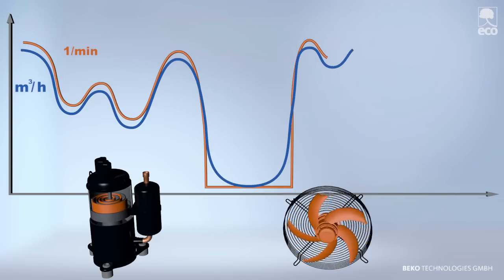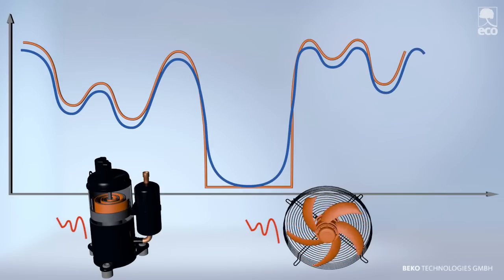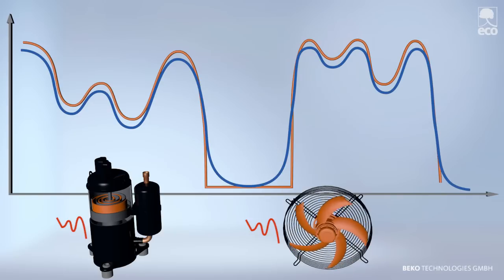Larger dryers adapt both the speeds of the compressor and the fan to match the volume flow. As the volume flow decreases, the drying performance is also automatically reduced or switched off entirely.